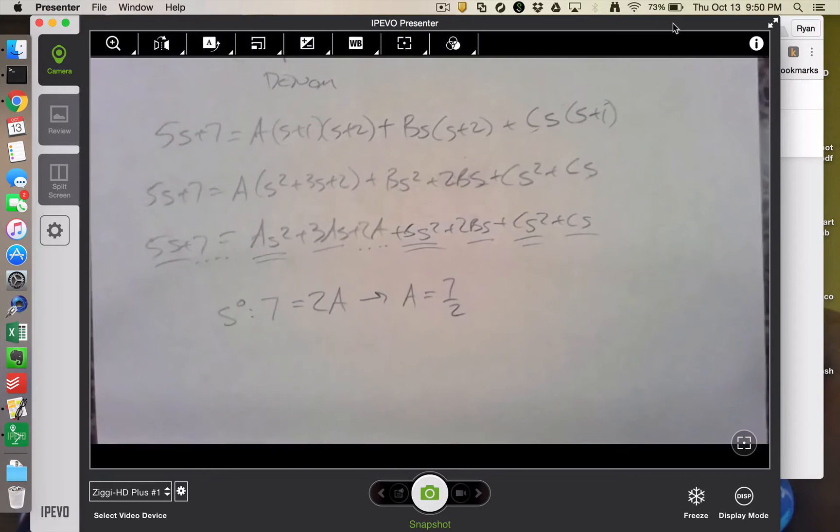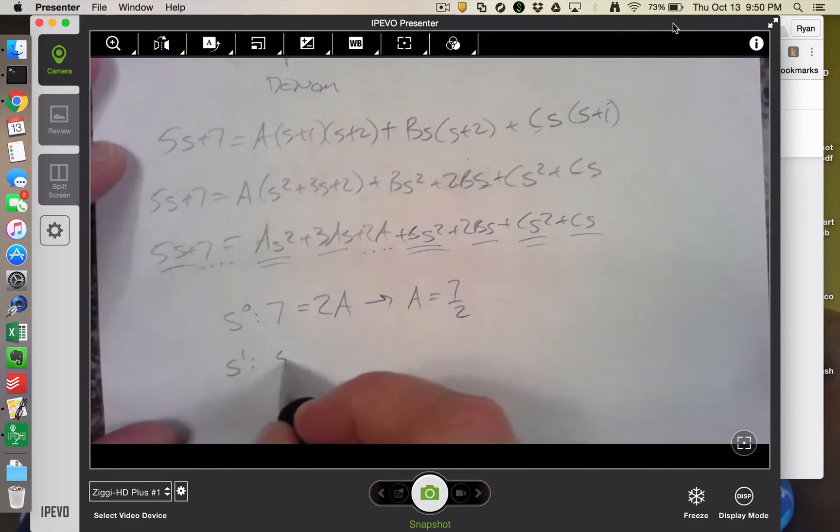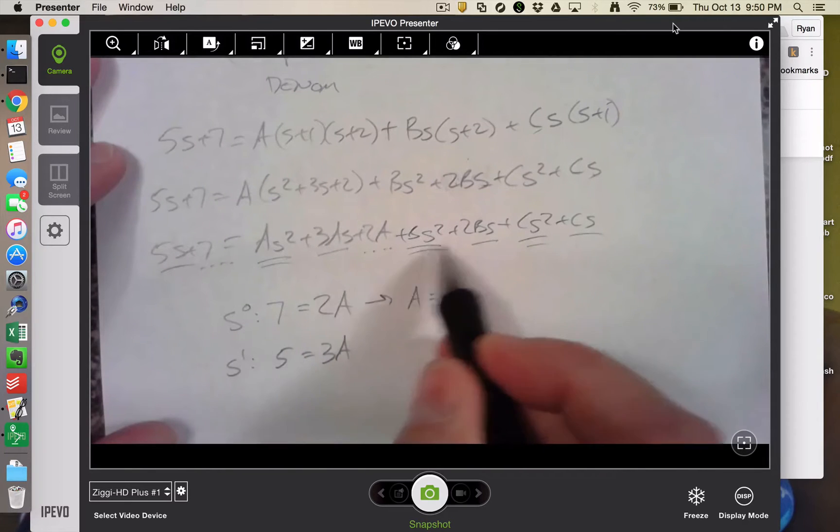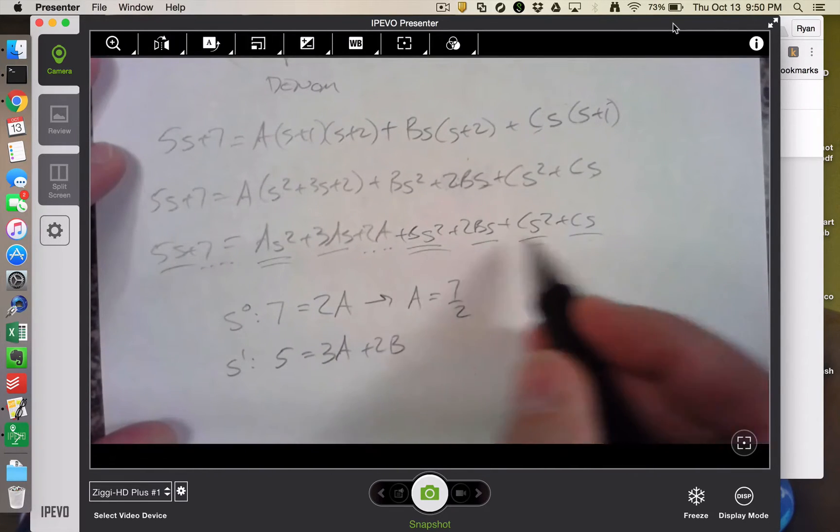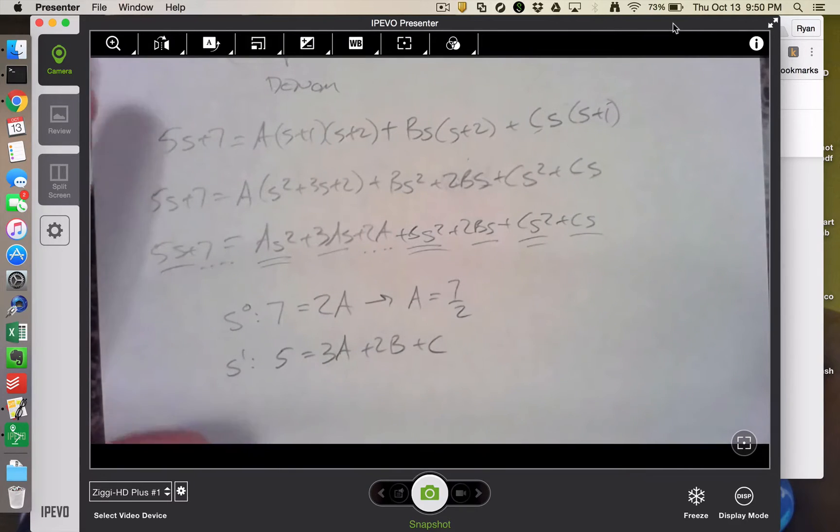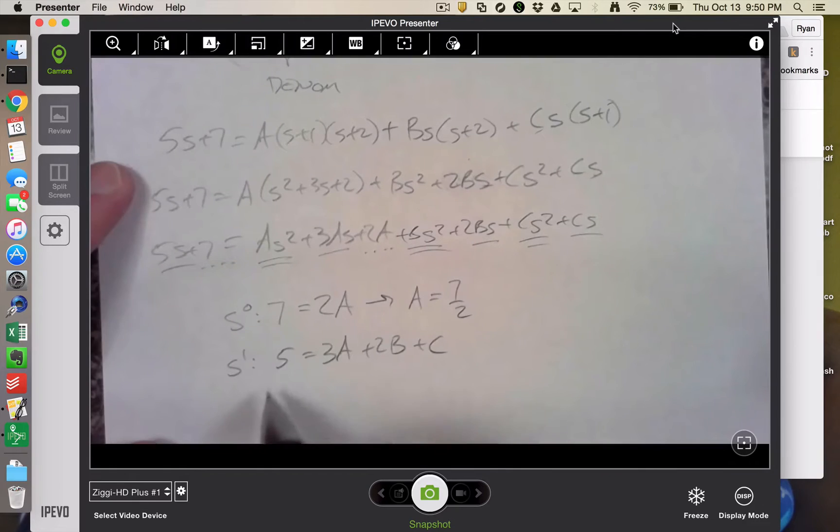And then I'm going to be left with kind of two equations and two unknowns. If I took s to the first, I would get 5 is equal to 3a plus 2b plus c. I already know the solution for a, so I could plug that in. 5 is equal to 21 halves plus 2b plus c. I could subtract that across. 21 halves is 10 and a half. So I guess I would get a negative 5.5 is equal to 2b plus c.